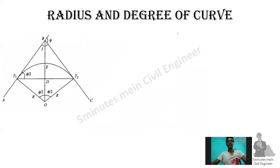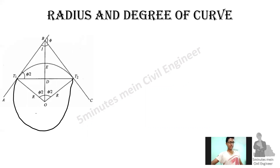We see the radius. The radius is from T1 to T2. This is a circle with center O. So O to T1 is the radius of the circle, which is the radius of the curve.